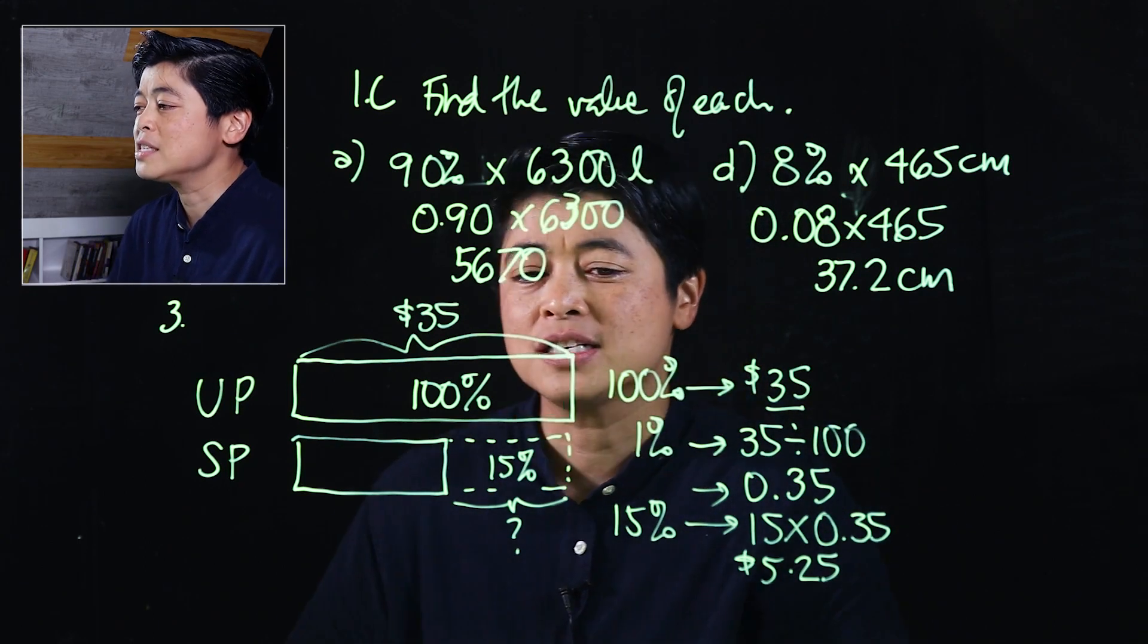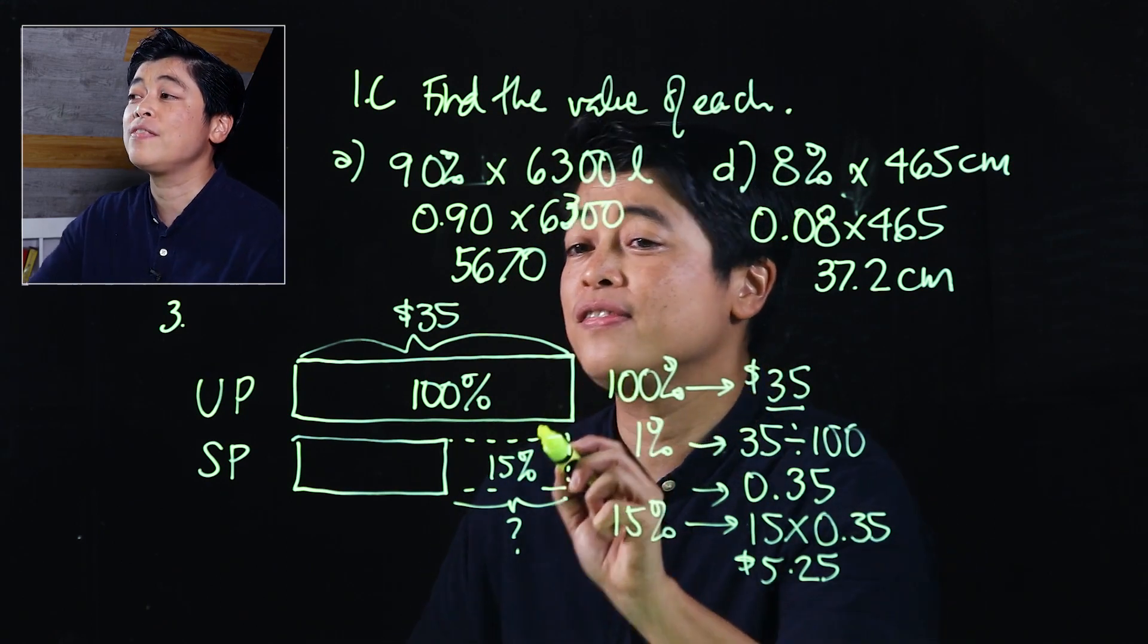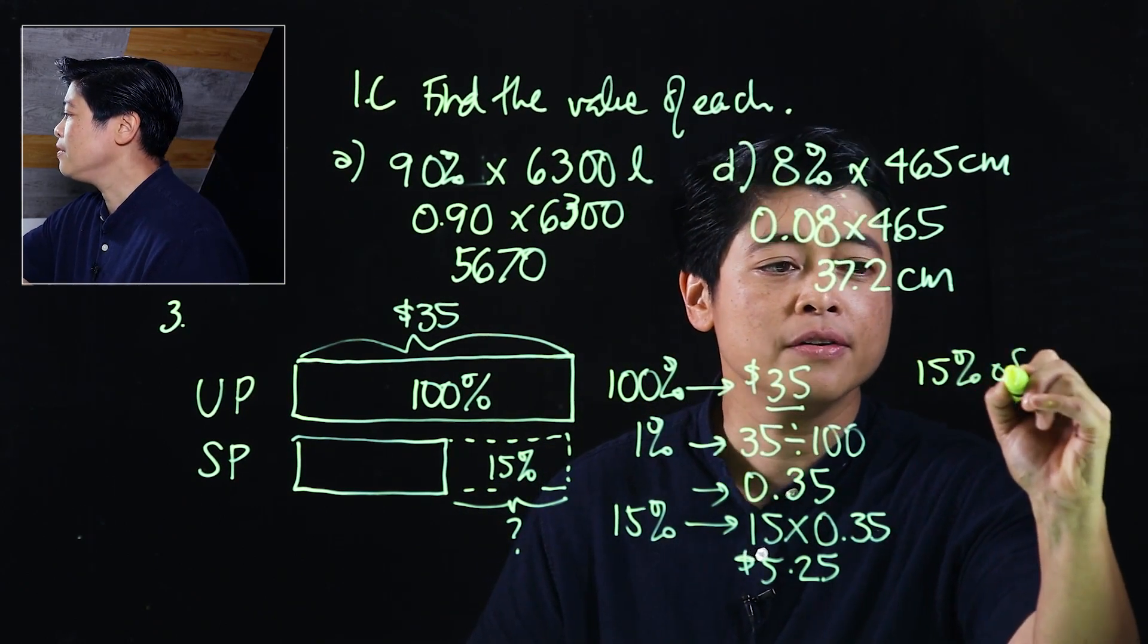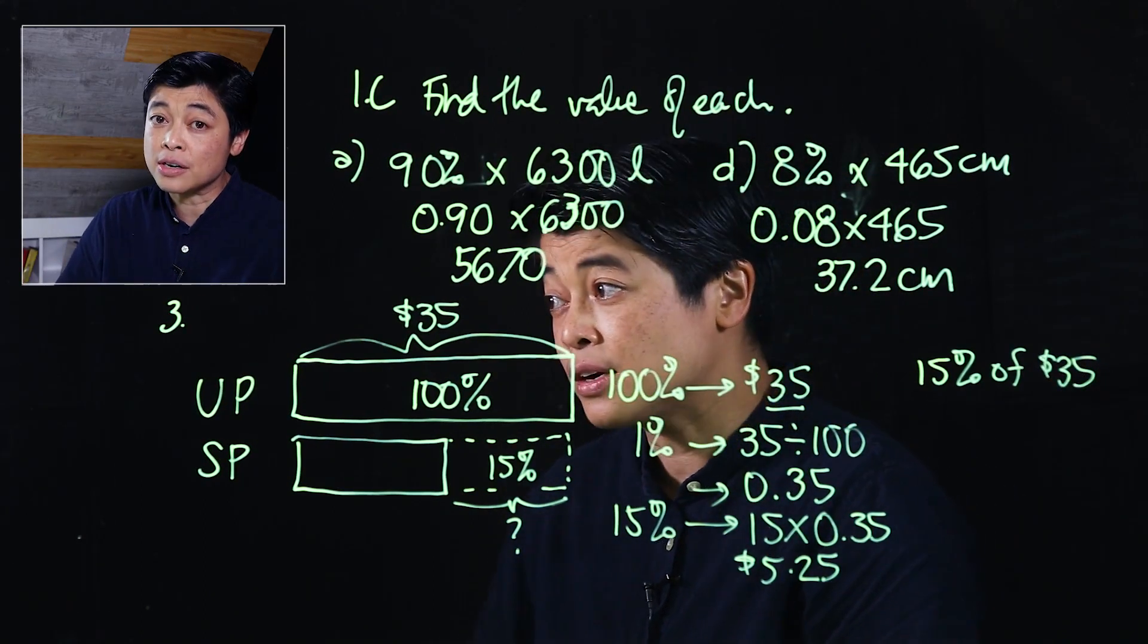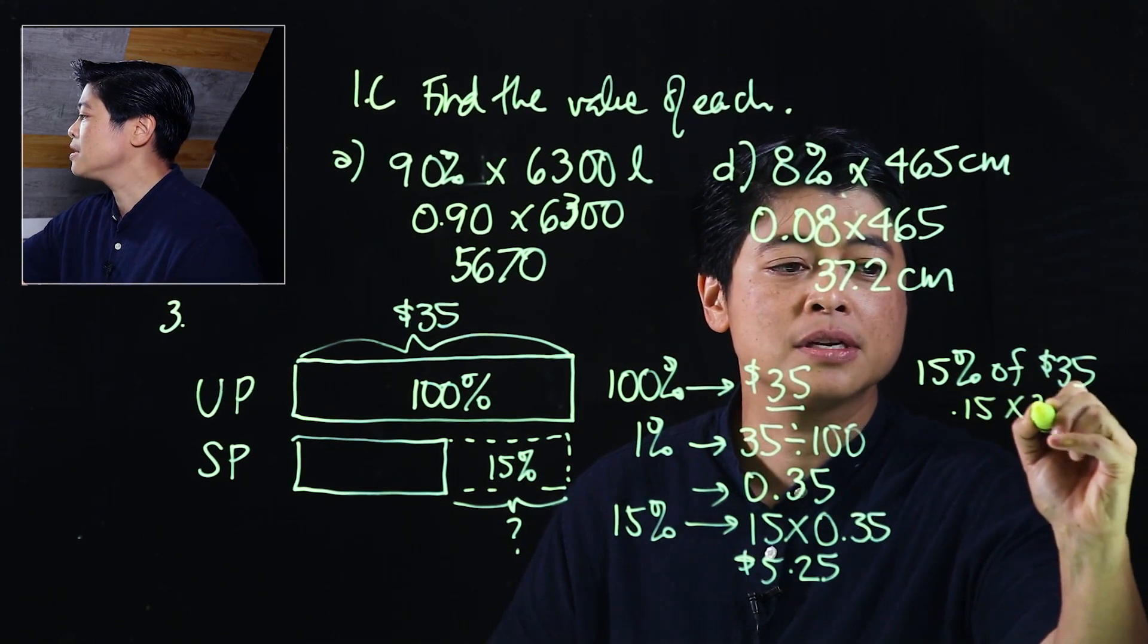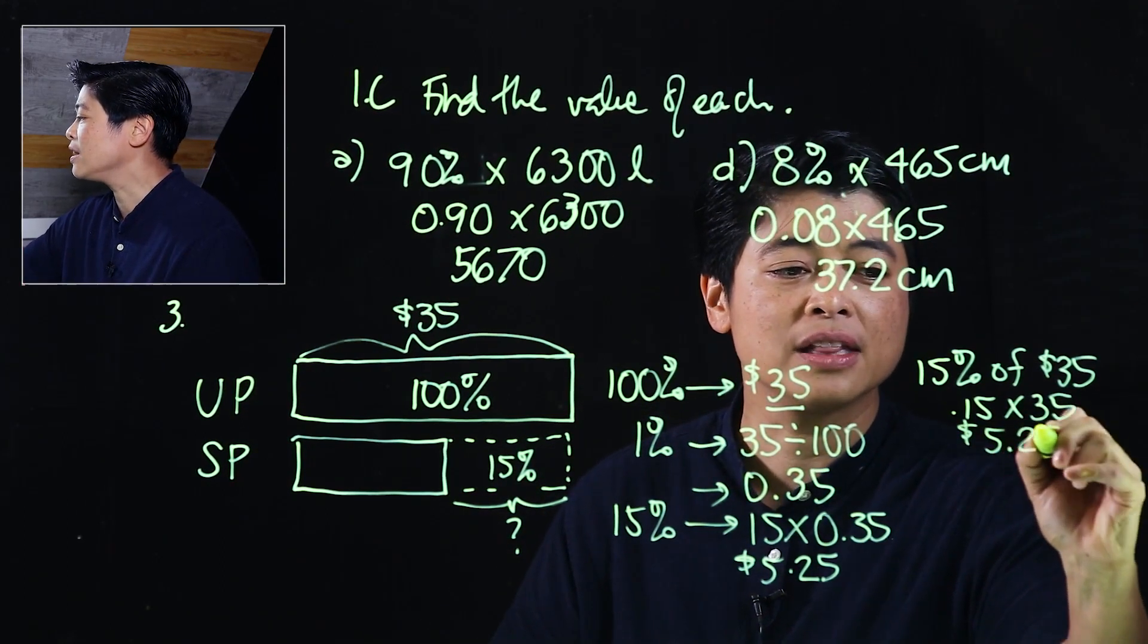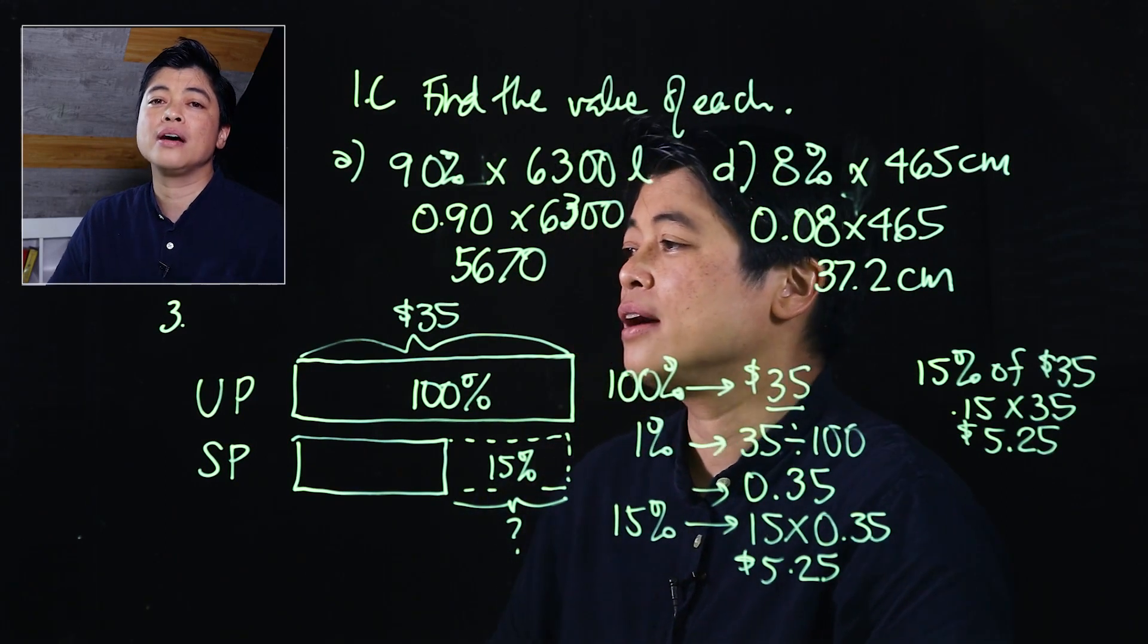But the alternative is since it wants the discount, we can just take 15% of $35. So 15% of $35, which means using the calculator, assuming that they're allowed, that would be 0.15 times 35. Which means the answer will also be $5.25.